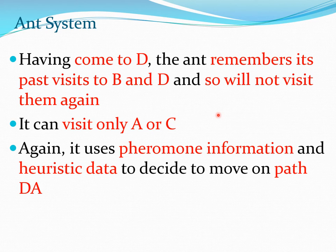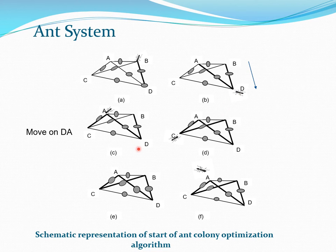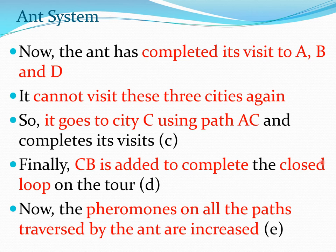The ant has taken this particular path and reached city D. Now the ant remembers it started from city B and will not visit B again. It has two possibilities — city A or city C. It uses pheromone information, heuristic data, and probability calculations to decide its move. Let's say it calculates the move along path D→A, so the ant moves from D to A based on heuristic values, pheromone level, and the probability calculation.